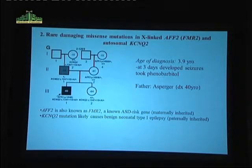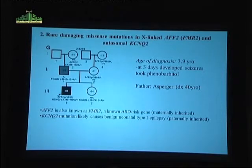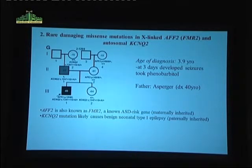After we published this, there have been a few other papers showing that this gene is involved in autism. It was previously described to be involved in a benign infantile form of epilepsy. AFF2 is inherited from the mother — it's on the X chromosome so she's unaffected, and it's passed to the male. He has these two mutations, and we think they're probably both contributing to the severity of his autism.